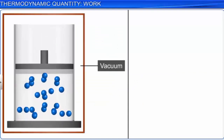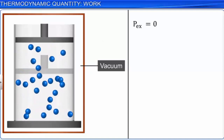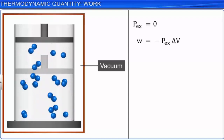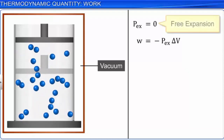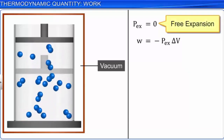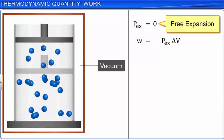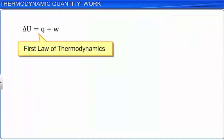If the gas expands in vacuum, external pressure PEX being 0 in the expression W = −PEX × delta V, W becomes 0. This is known as free expansion. No work is done during the free expansion of an ideal gas, whether the process is reversible or irreversible. We know that according to the first law of thermodynamics, the change in internal energy is represented as delta U = Q + W.